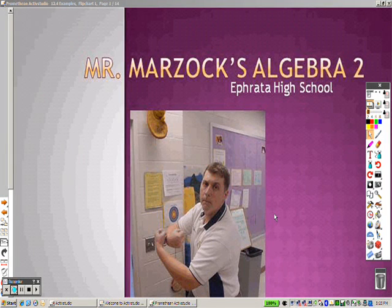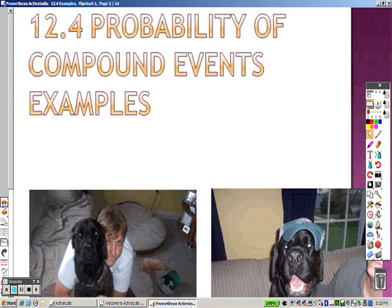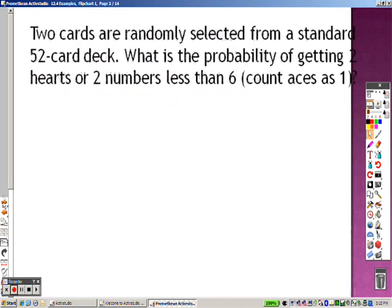Okay, so 12.4 now. So we're on 12.4. And in 12.4, it's the probability of compound events.